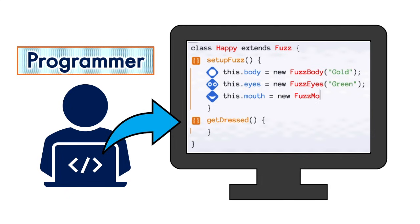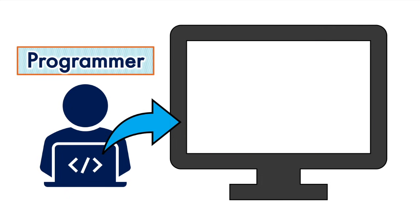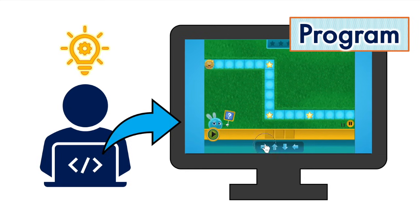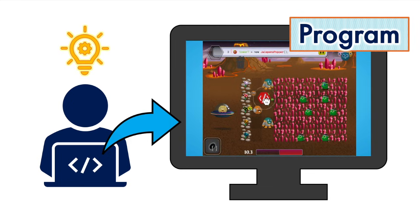These instructions are written in a language the computer understands, called code. Programmers write the code to make a program run or work. A program can be anything from moving a character across a screen to an entire game.